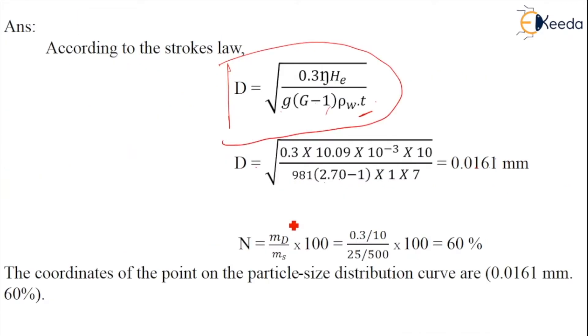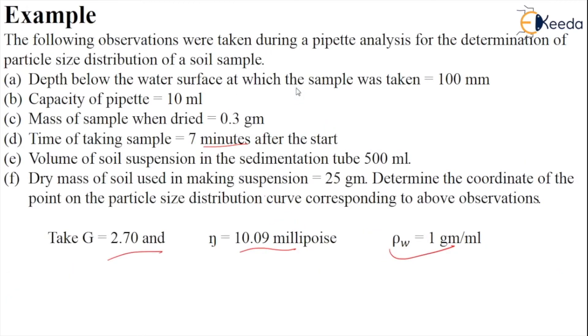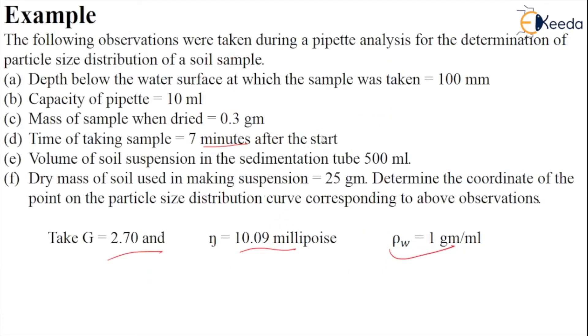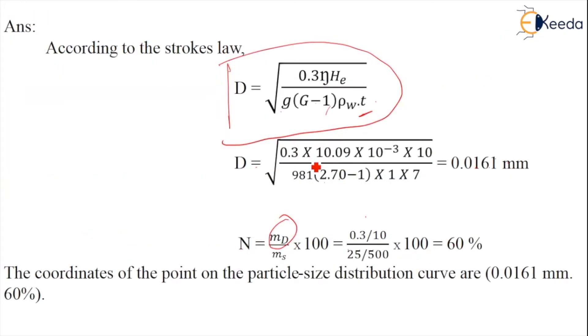It is dry mass by suspension mass. Dry mass is 0.3 gram and suspension mass is 25 gram. So 0.3 divided by 25. The sedimentation tube capacity is 500, so 25 by 500. Capacity of pipette is 10, so 0.3 ml by 10. This gives 0.3 by 10 and 25 by 500 times 100, which equals approximately 60 percent.